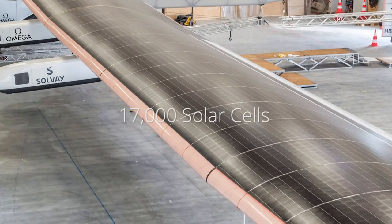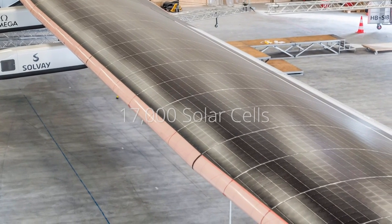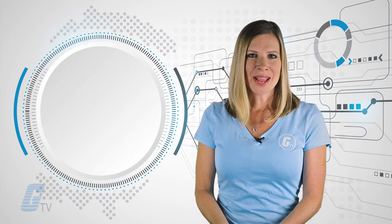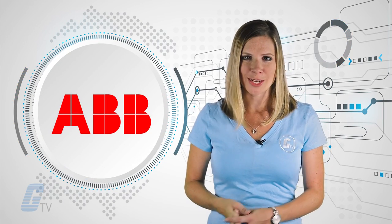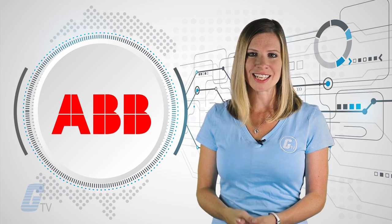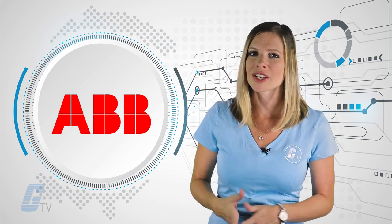Powered by over 17,000 solar cells, the plane's average flight speed is just 43 miles per hour. ABB was a major financial contributor to the project and helped provide dedicated engineers to help with certain electrical solutions.